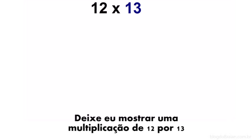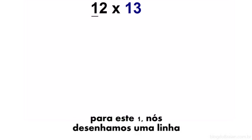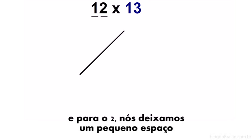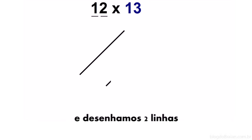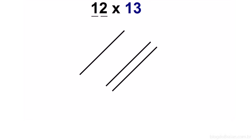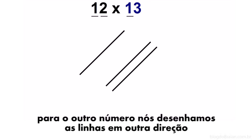Let's say you want to multiply 12 by 13. For this 1, we'll draw one line. And for the 2, we'll leave a little bit of space and we'll draw two lines. For the other number, we'll draw lines in the other direction.